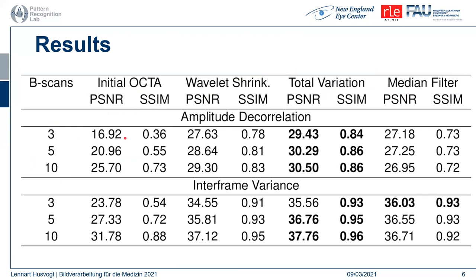We can see that in all instances, our reconstruction as well as the median filter already achieved significant improvements, especially for amplitude decorrelation, because amplitude decorrelation tends to be noisier than interframe variance. Overall, total variation seems to perform best, except in the case of interframe variance with only three repeats, where the median filter achieved a better PSNR result than total variation.